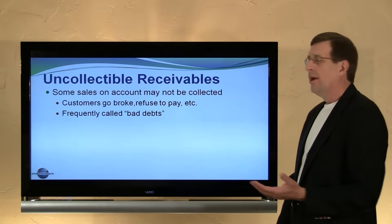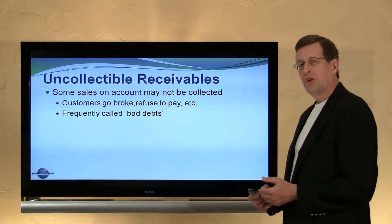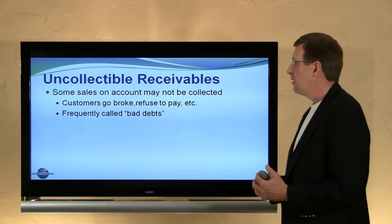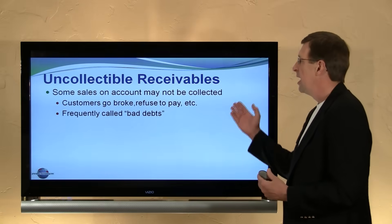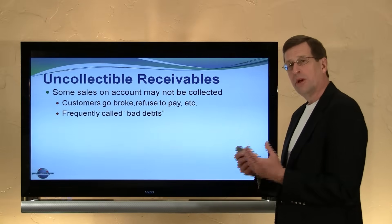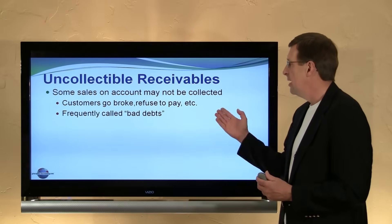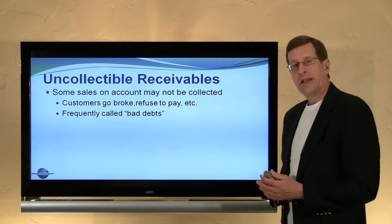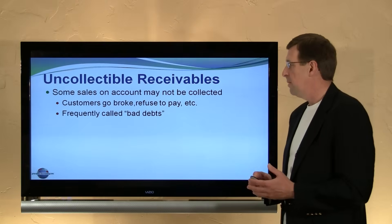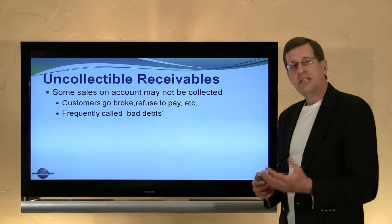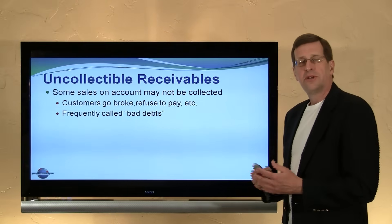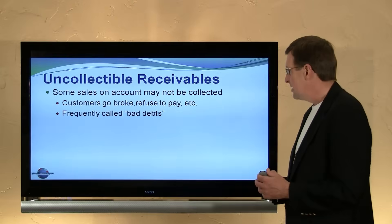When a company directly extends credit, one of their greatest risks and perhaps one of their greatest costs is the chance that some customers may not pay — that those receivables will go uncollected. Customers might go broke, there might be a dispute, customers refuse to pay. These amounts, these uncollectible accounts, are also sometimes called bad debts.